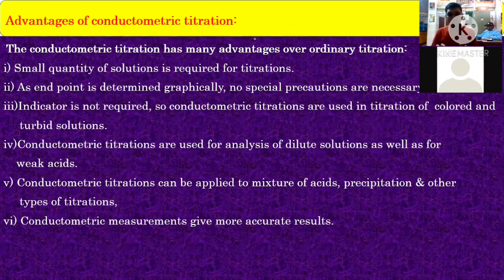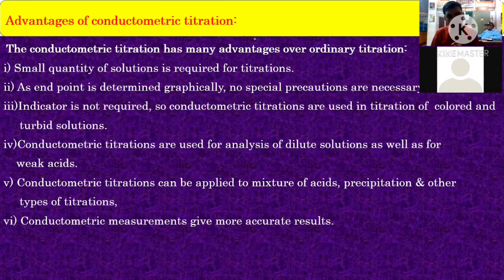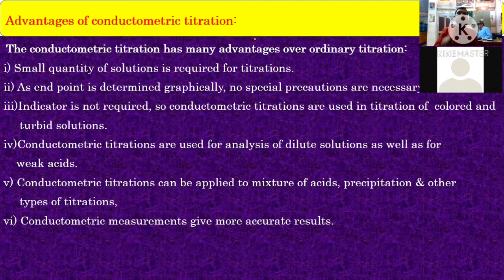The reading shown by the conductivity meter is plotted in a graph to determine the equivalence point. One more important point: in conductometric titration, no special indicator is required — only the fluctuation of conductance reading is needed. Therefore, conductometric titration can be used for titration of colored and turbid solutions.